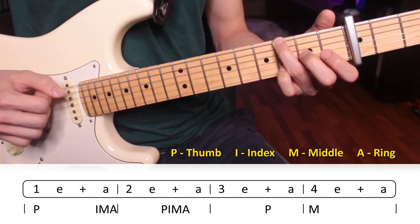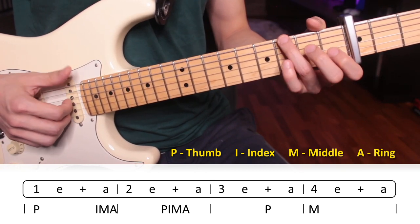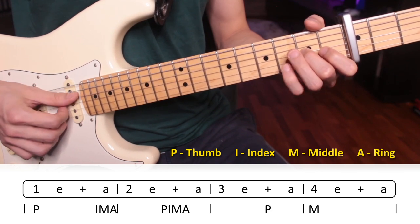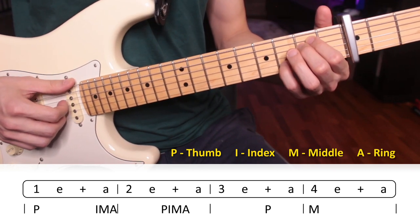And then same thing for the D major, but just instead of playing the 6th string, you're going to play the 4th string with your thumb. Same thing for the E minor 7, thumb on the 6th string.